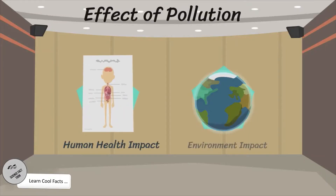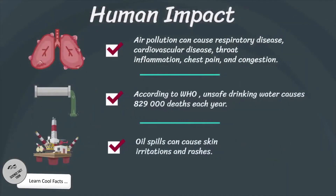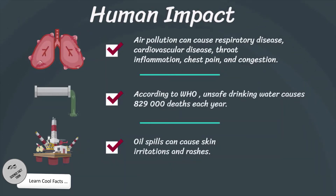Pollution has two main impacts: human impact and environmental impact. For human impact, air pollution can cause respiratory disease, cardiovascular disease, throat inflammation, chest pain, and congestion. According to the World Health Organization, unsafe drinking water causes 829,000 deaths each year. Oil spills can cause skin irritations and rashes.